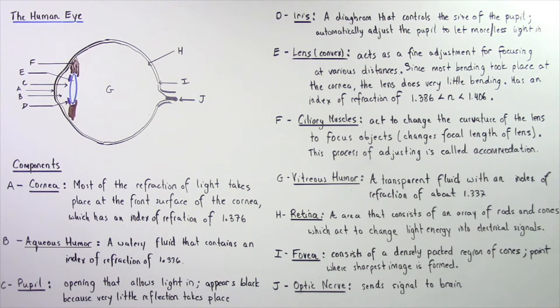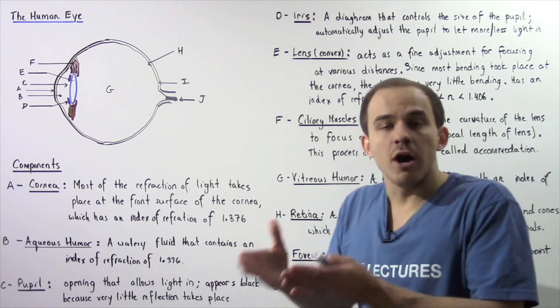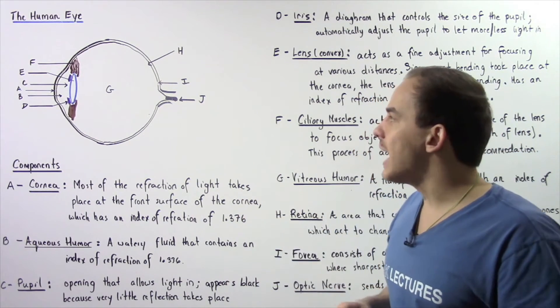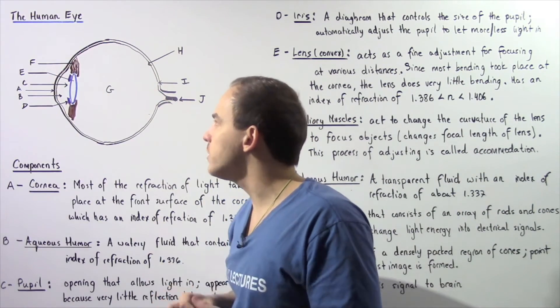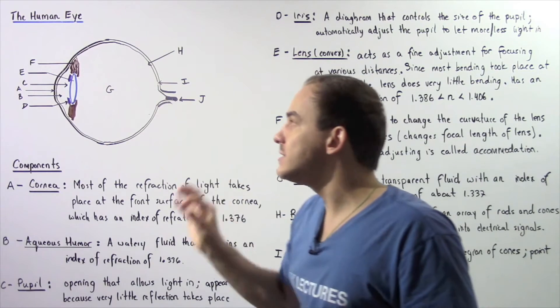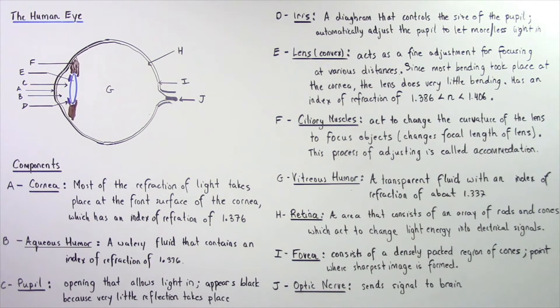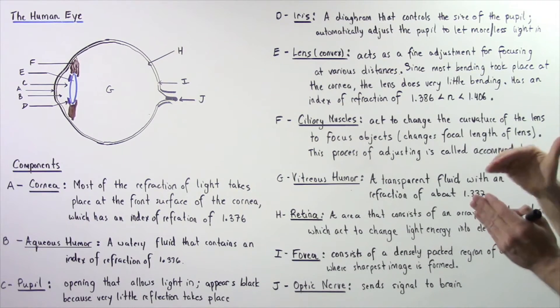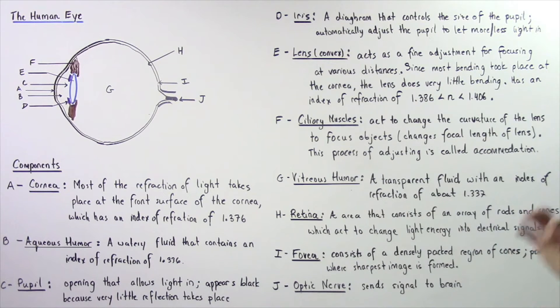The lens acts as a fine adjustment for focusing at various distances. Notice, most of the refraction of light actually takes place on the front surface of the cornea. And the lens does not actually bend the light very much. What the lens does is it focuses our light into a certain region known as the retina.